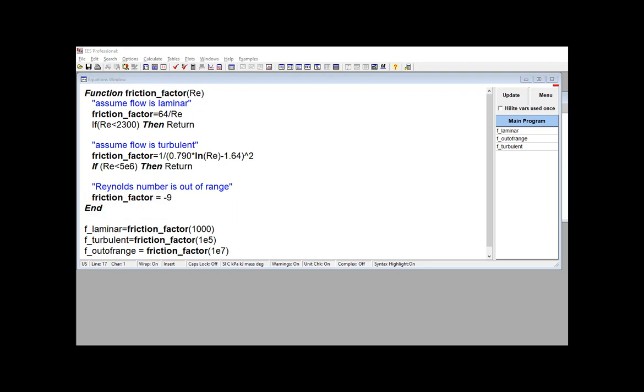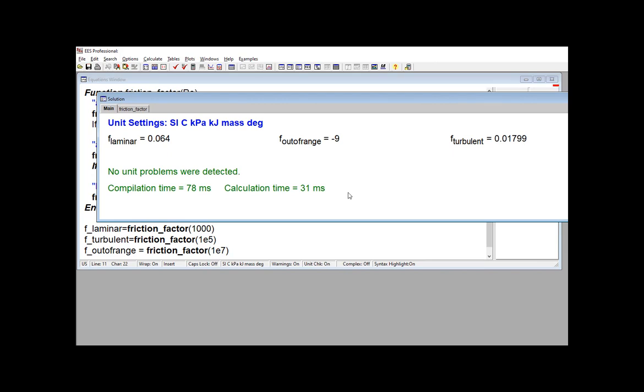A much better way of dealing with this kind of a situation where you have inputs that are out of range would be to issue a warning or even an error. And you can do that using the warning or the error procedures, which we will describe in Section 3.7. So we can test this function at various Reynolds numbers, and you can see that it's working basically the way we expected it to.